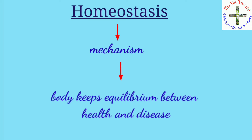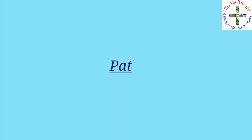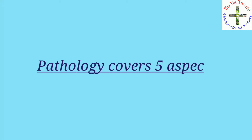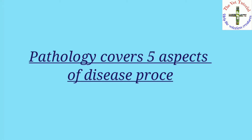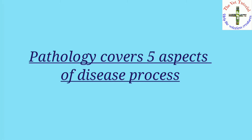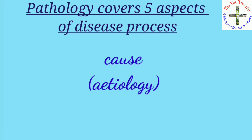Homeostasis is the mechanism by which the body keeps equilibrium between health and disease, or the tendency to maintain a stable or relatively constant internal environment. An example is adaptation to an altered environment. Pathology covers five aspects of the disease process: first is its cause, that is etiology; second is the mechanism of development, that is pathogenesis.